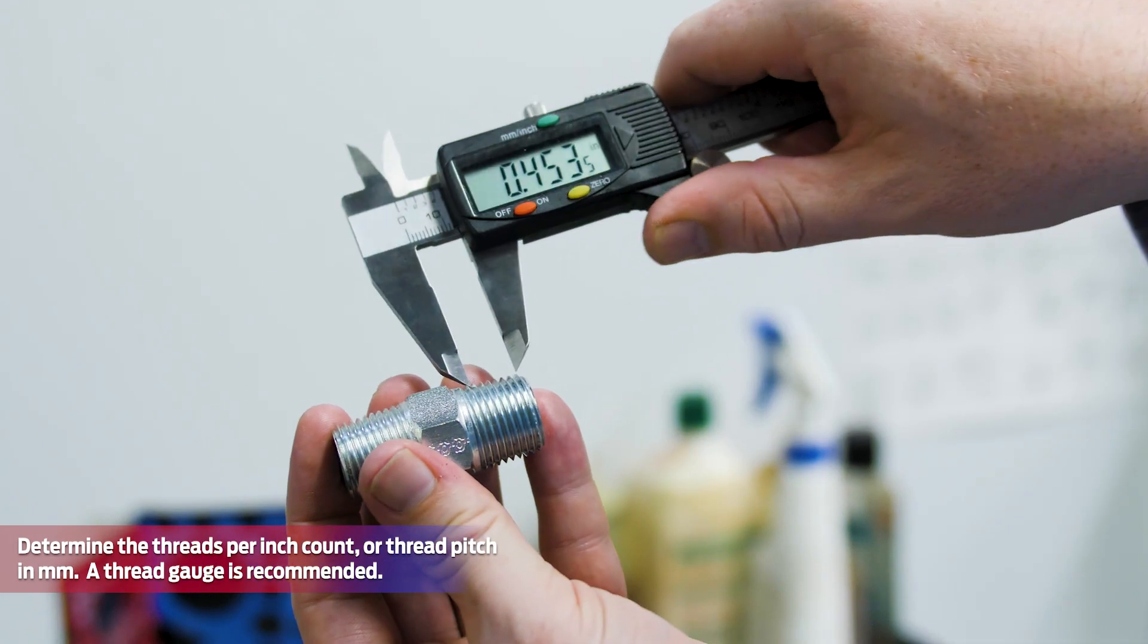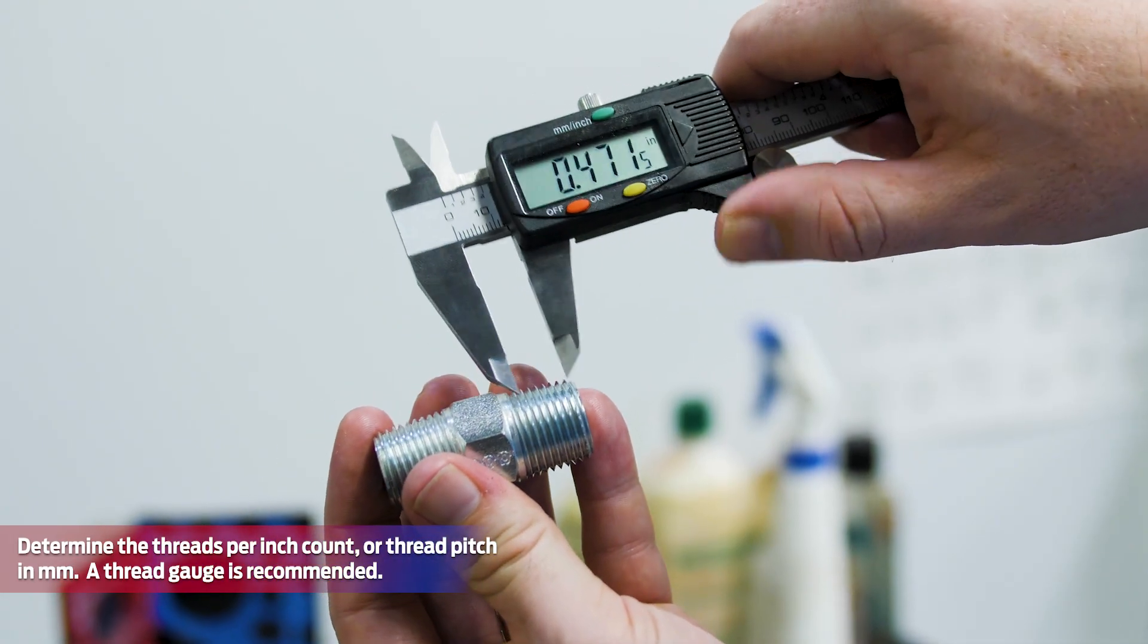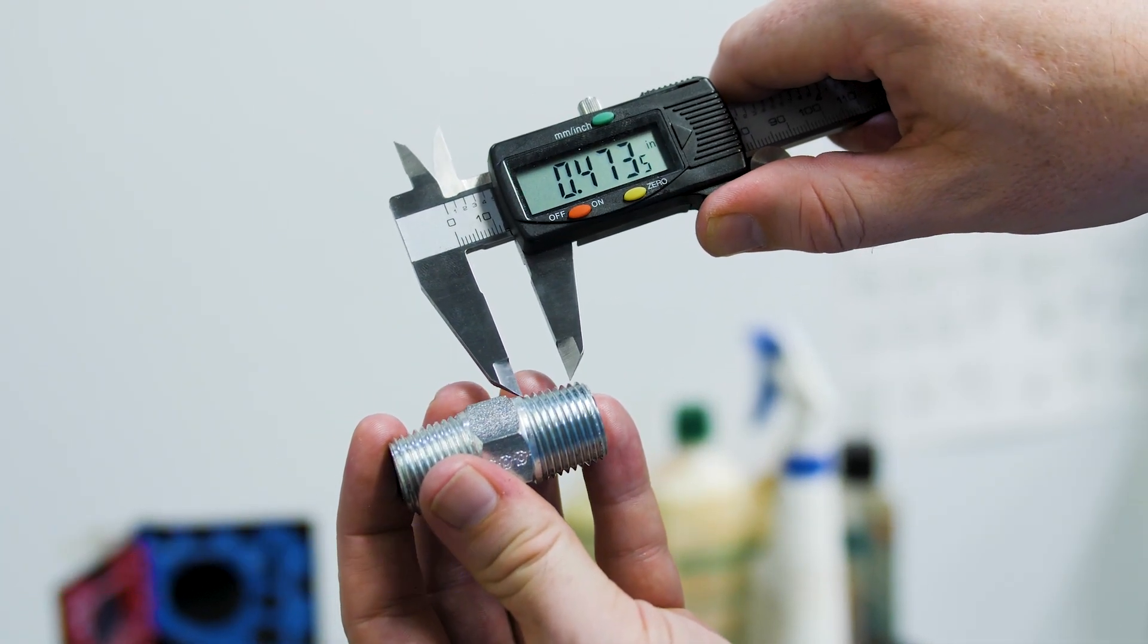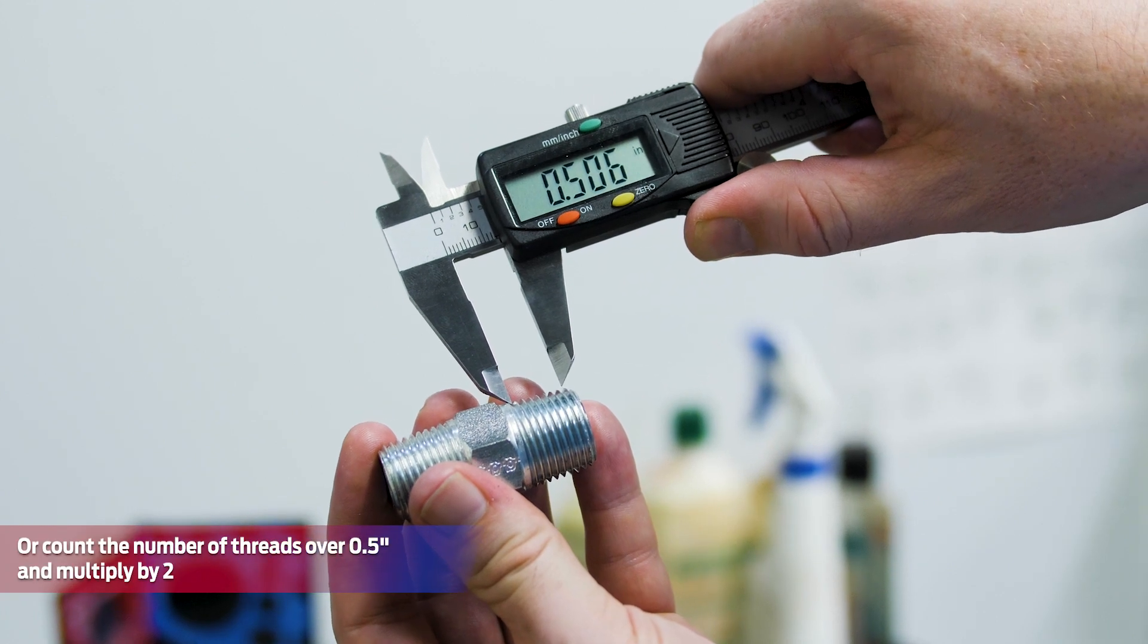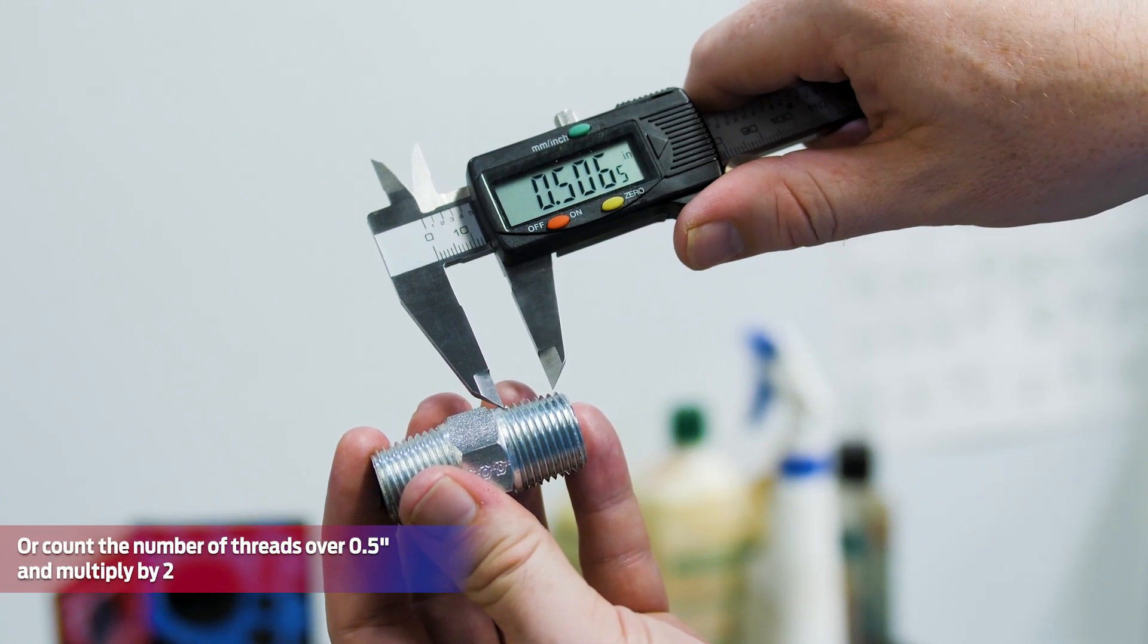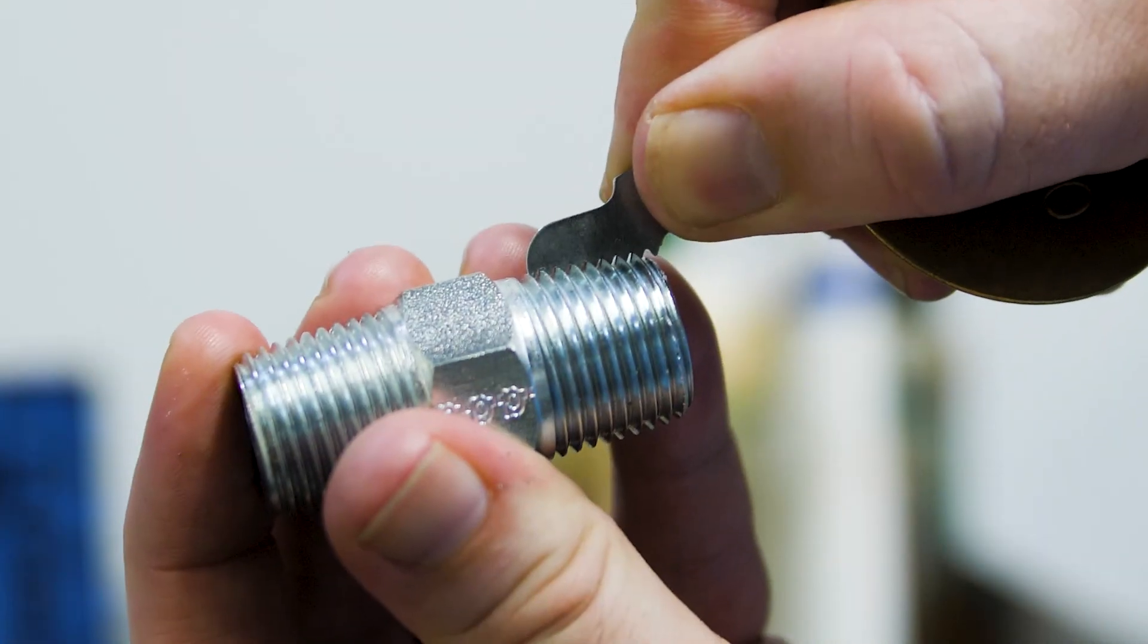Determine the threads per inch count or thread pitch. For British threads, this can be done using calipers and counting the number of threads that exist over one inch. For metric threads, determine the distance in millimeters between thread crests.